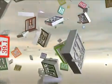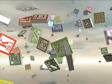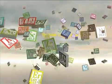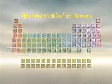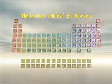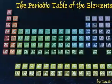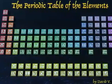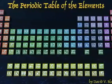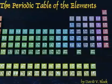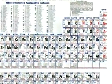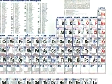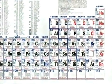In part one of this episode, we introduced you to the Periodic Table of the Elements and why all chemistry students should understand its structure and origins. Now, we continue to unearth the story of how the chemical elements came to be organized into this famous chart.